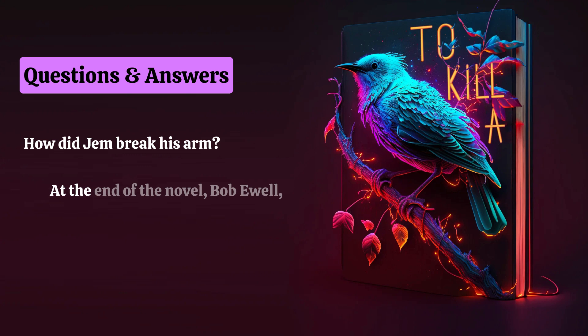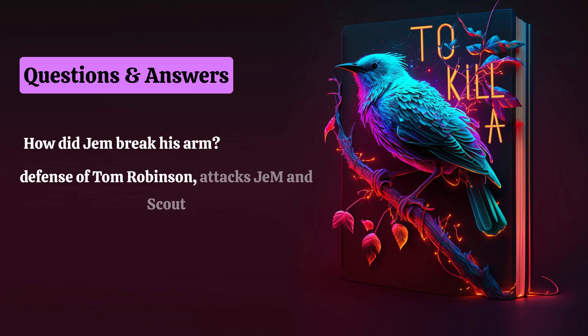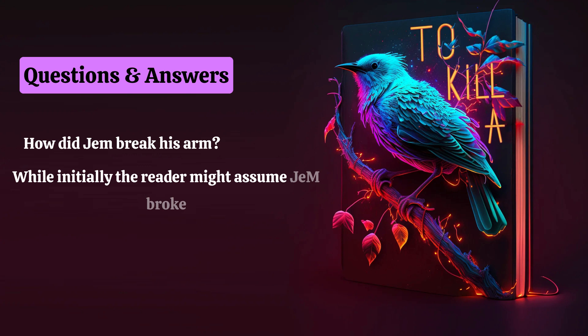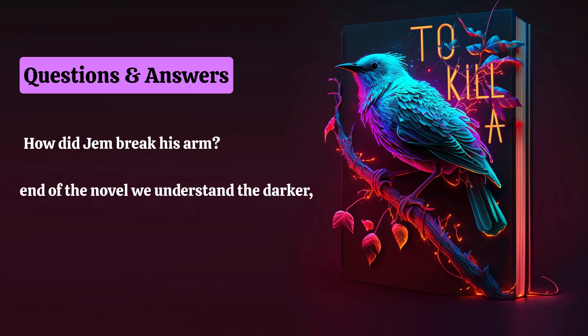At the end of the novel, Bob Ewell, who has suffered as a result of Atticus's defense of Tom Robinson, attacks Jem and Scout on their way home from the Halloween pageant. Jem breaks his arm in the struggle. The story of a broken arm serves as a narrative device, book-ending the entire novel with Scout's telling of the story. While initially the reader might assume Jem broke his arm through innocent childhood games, by the end of the novel we understand the darker, more complicated truth behind the accident.